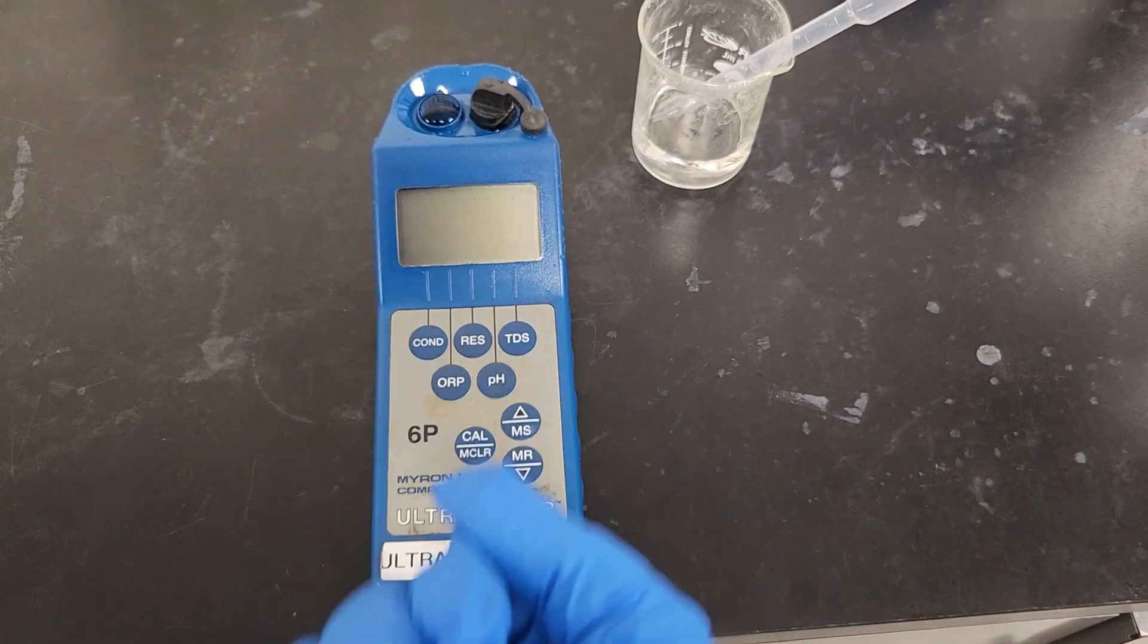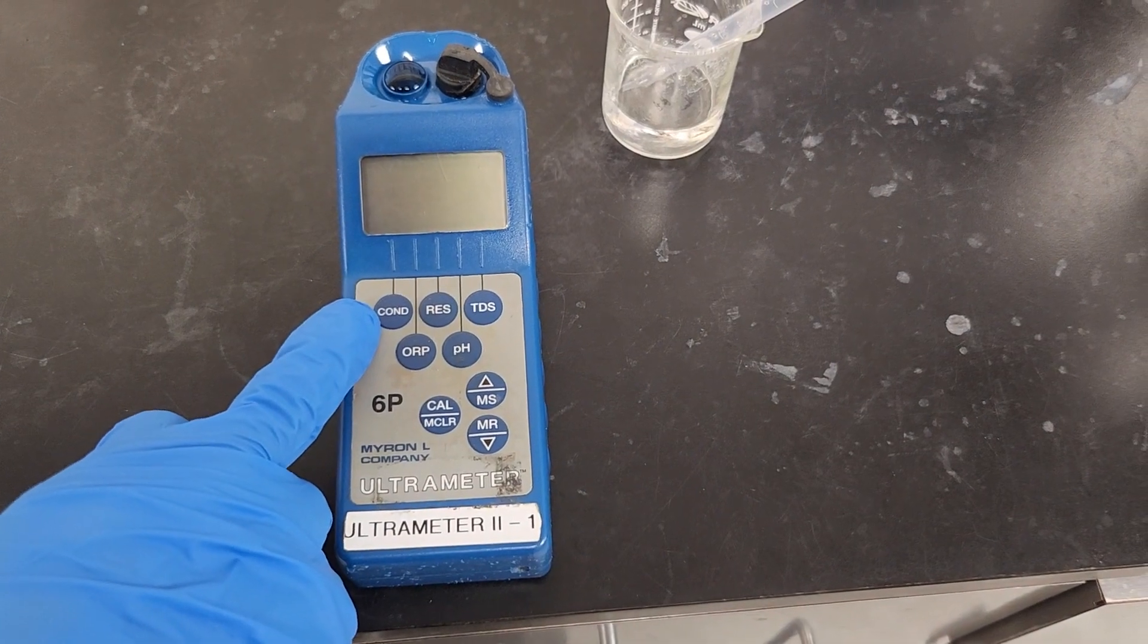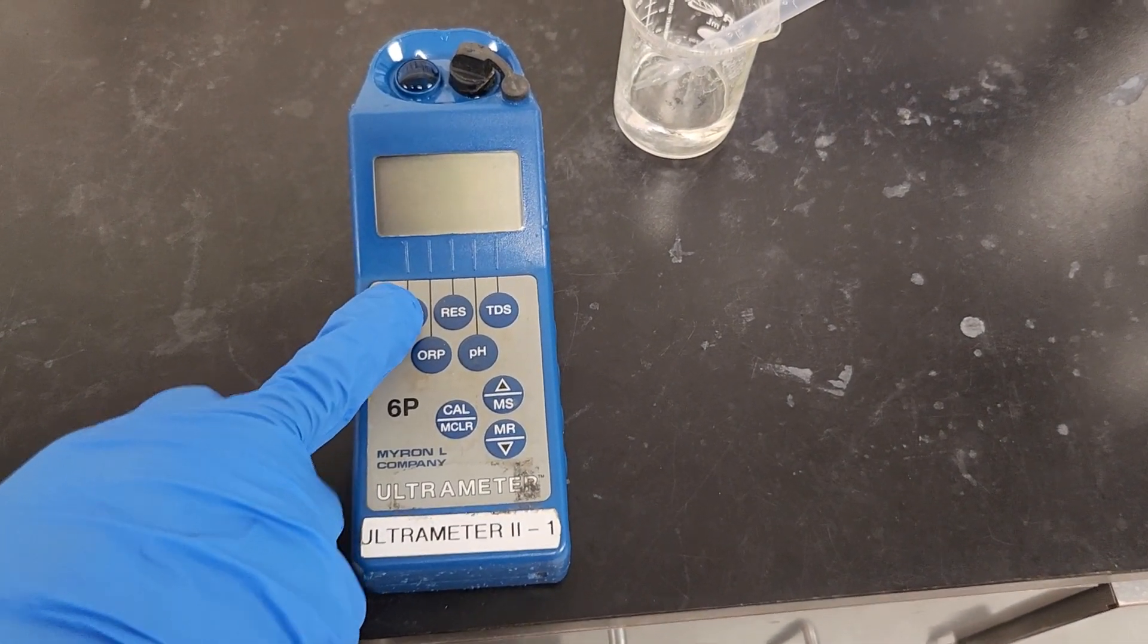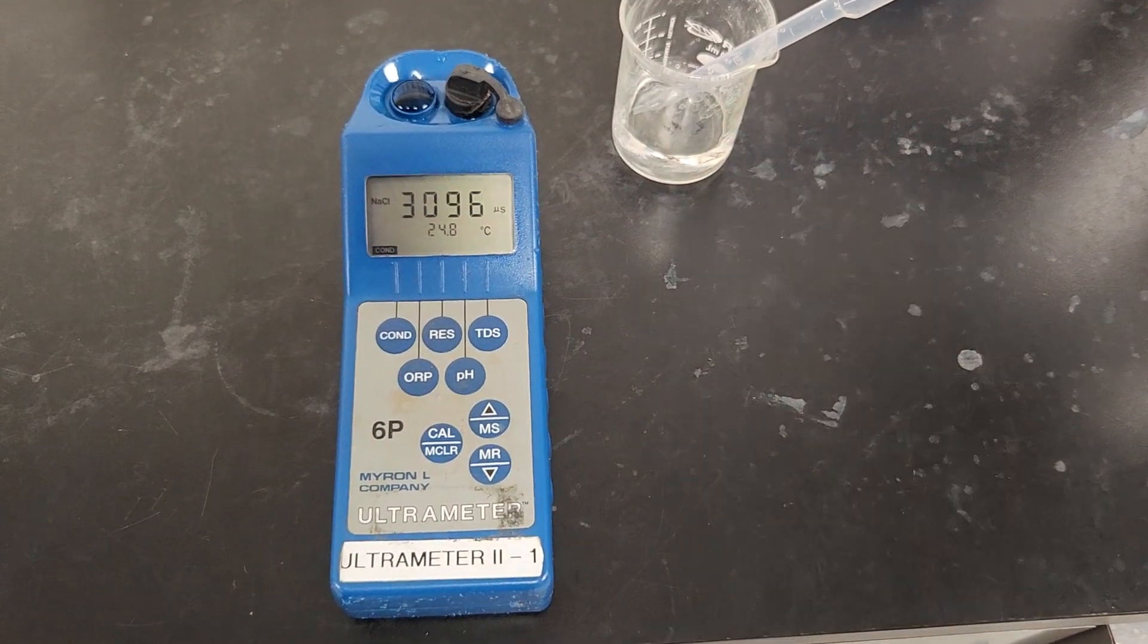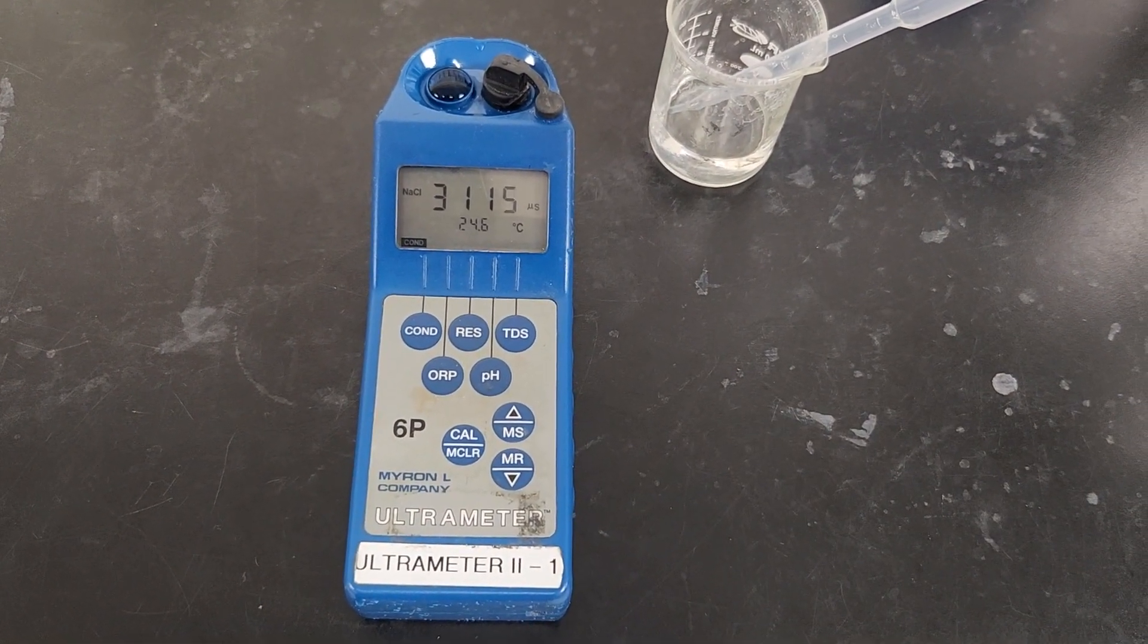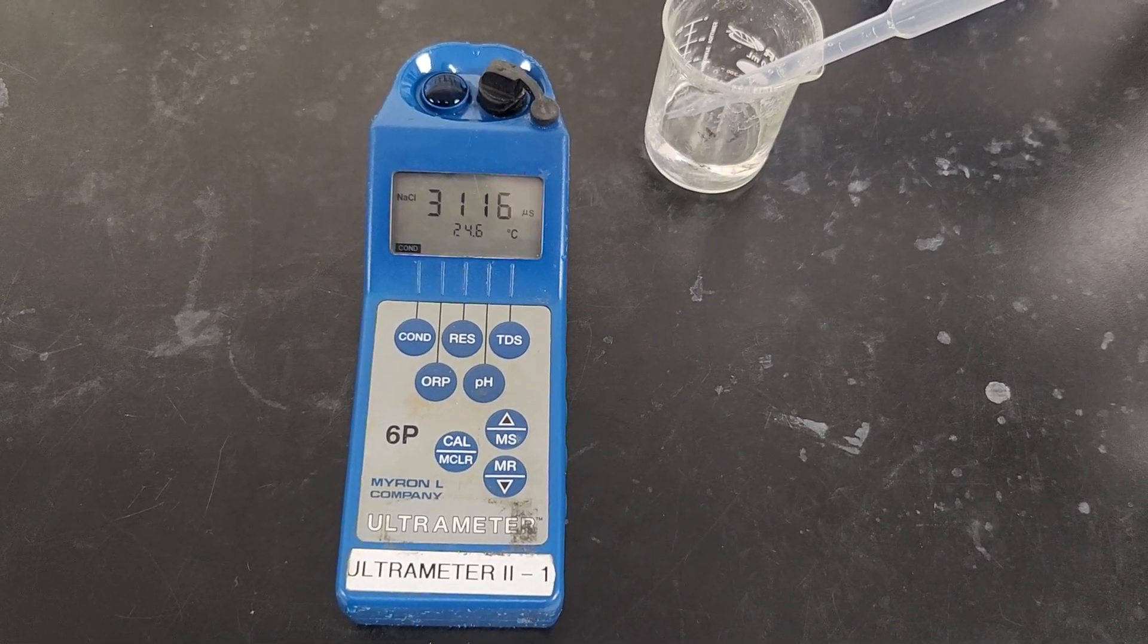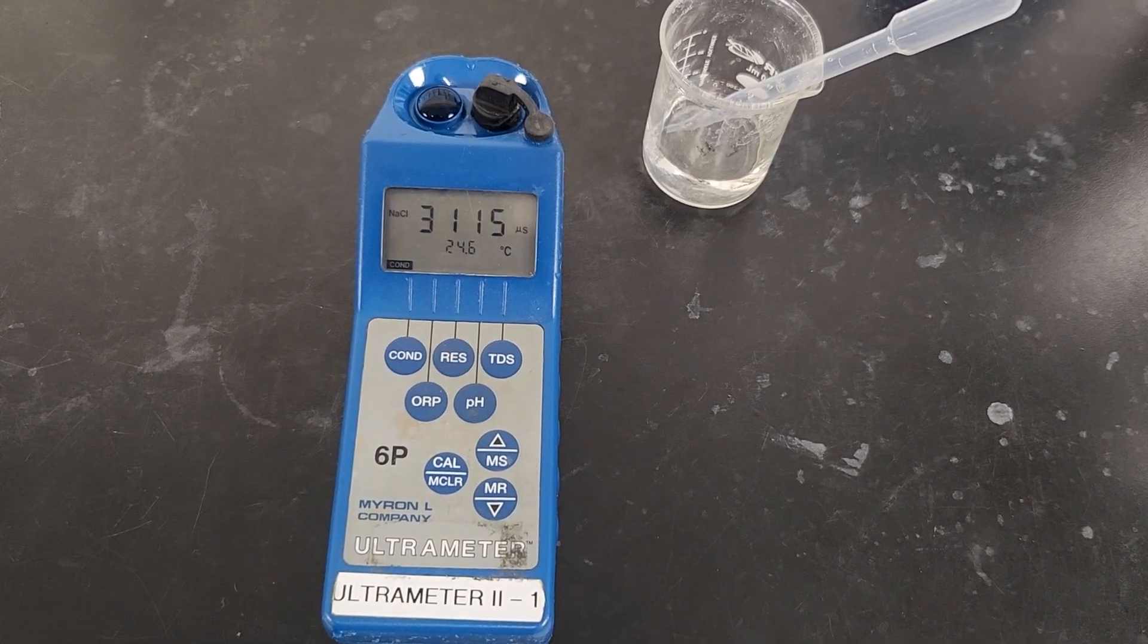And here 'cond' means conductivity and I'll press it. So it's giving us 3115, 3116, between that range, 3115 and 3116.